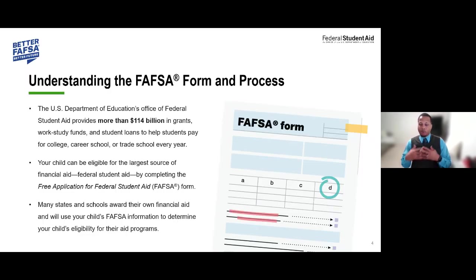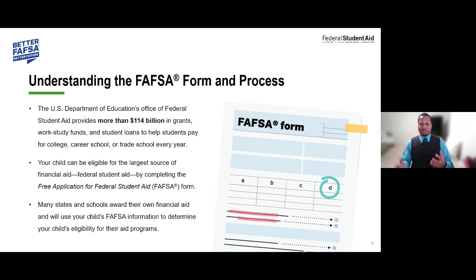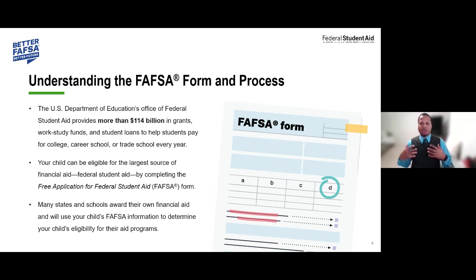Who are we here at Federal Student Aid, also known as FSA? We are the office that administers the Free Application for Federal Student Aid and over $114 billion in grants, work-study funds, as well as student loans. These loans help students pay for college, career school, and trade schools every year.